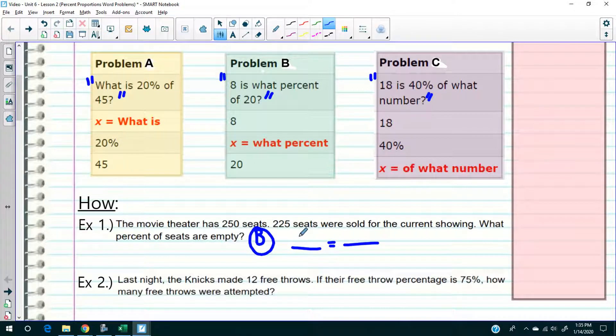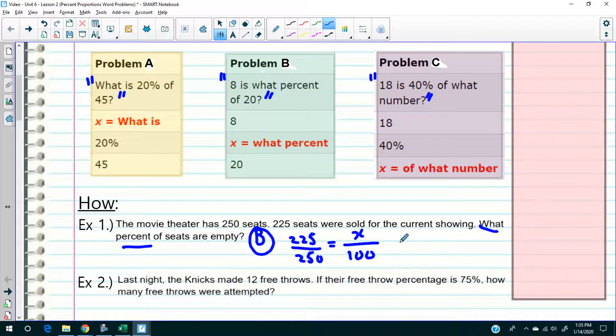So 225 out of 250 is - look at this - what percent? We're turning a fraction to a decimal. So what we're going to do now is 225 times 100 divided by 250. What is that? 90. Now 90 what? For type B question, 90%.